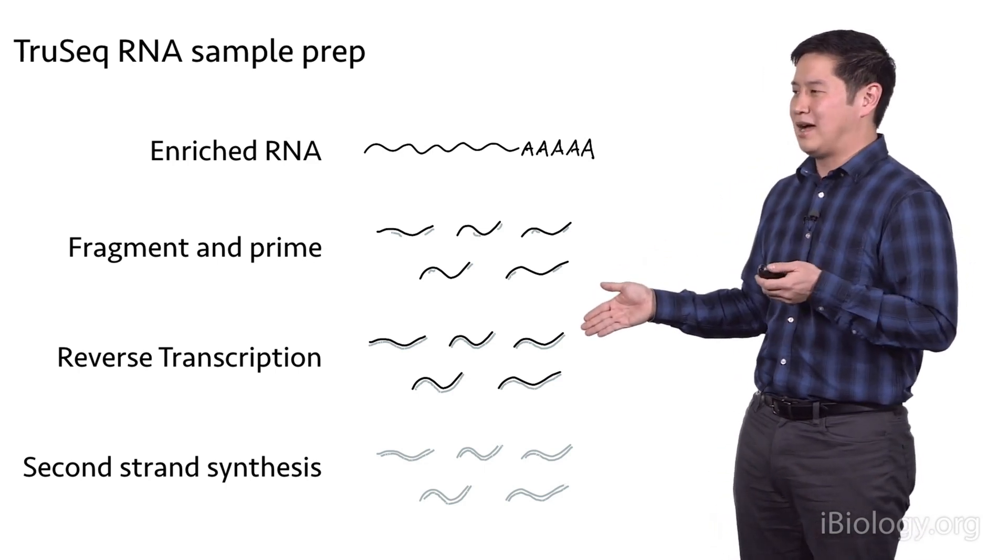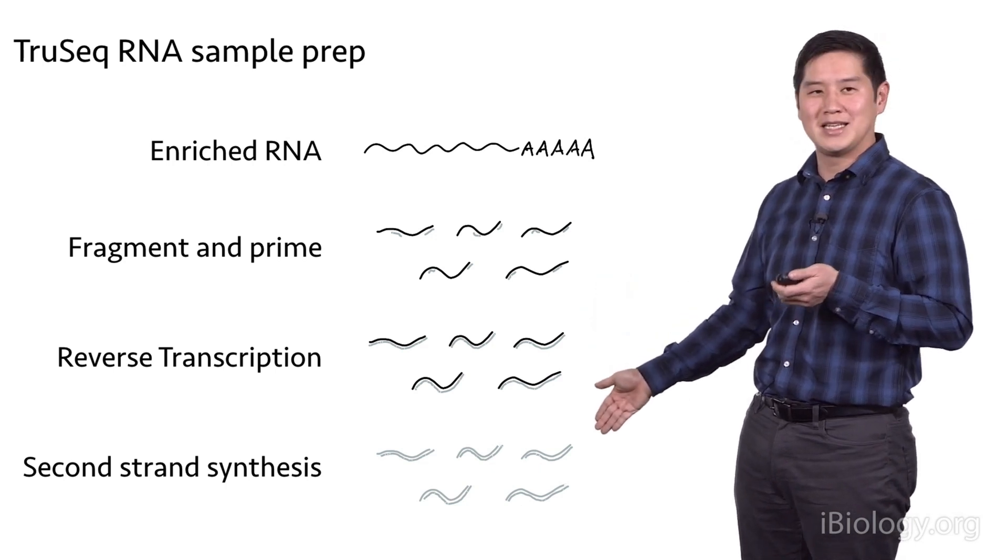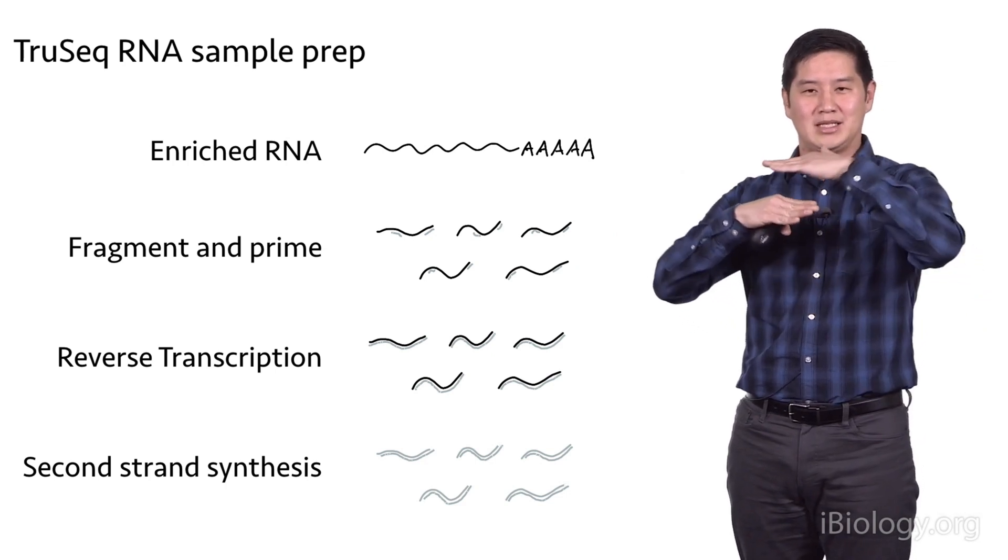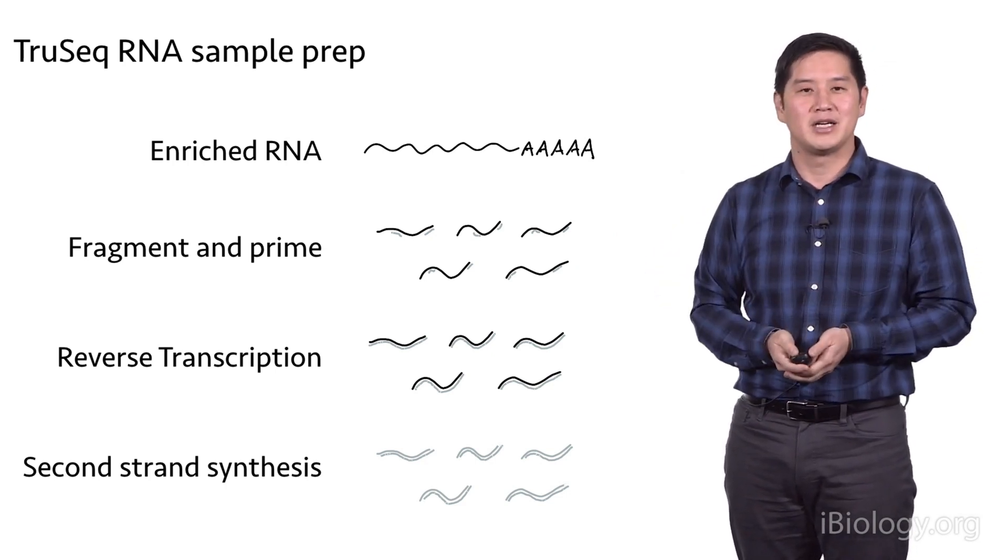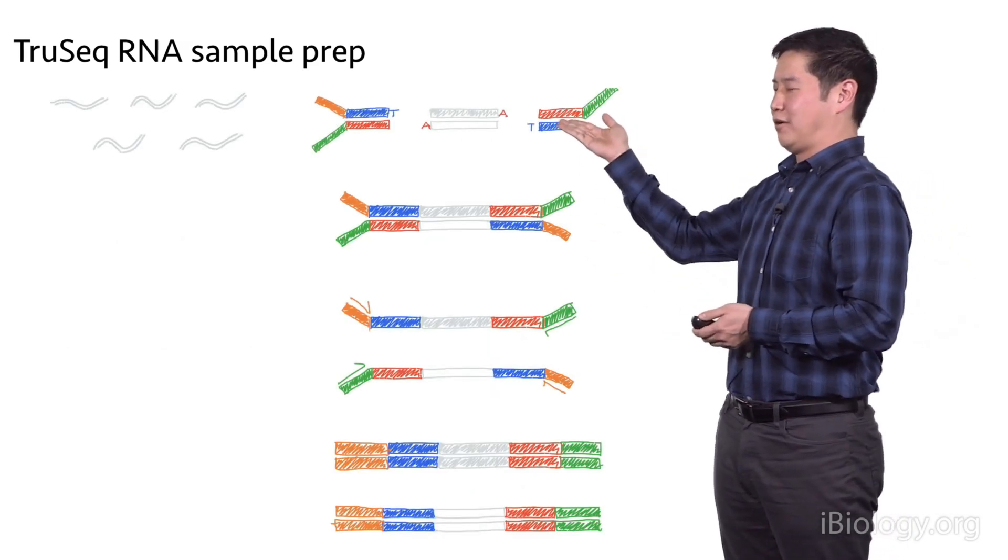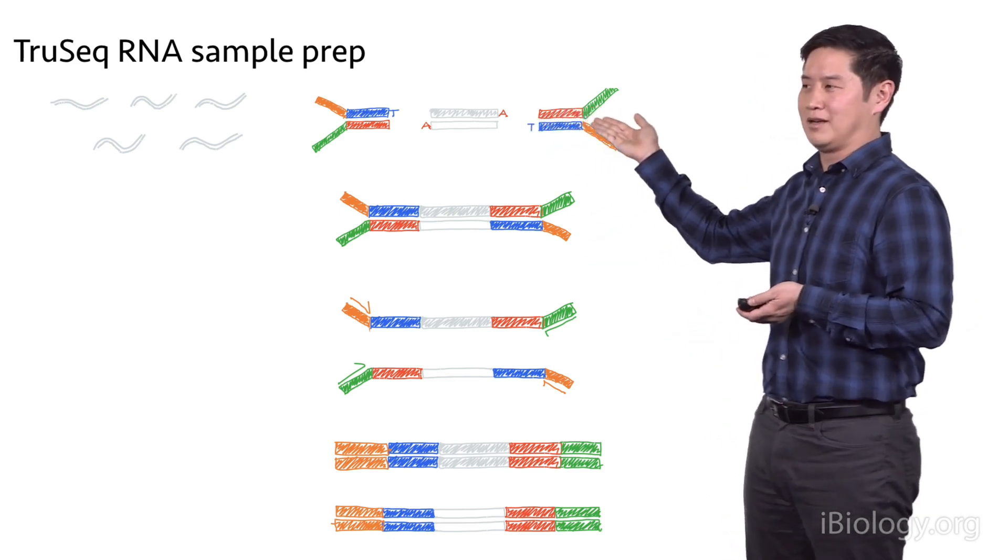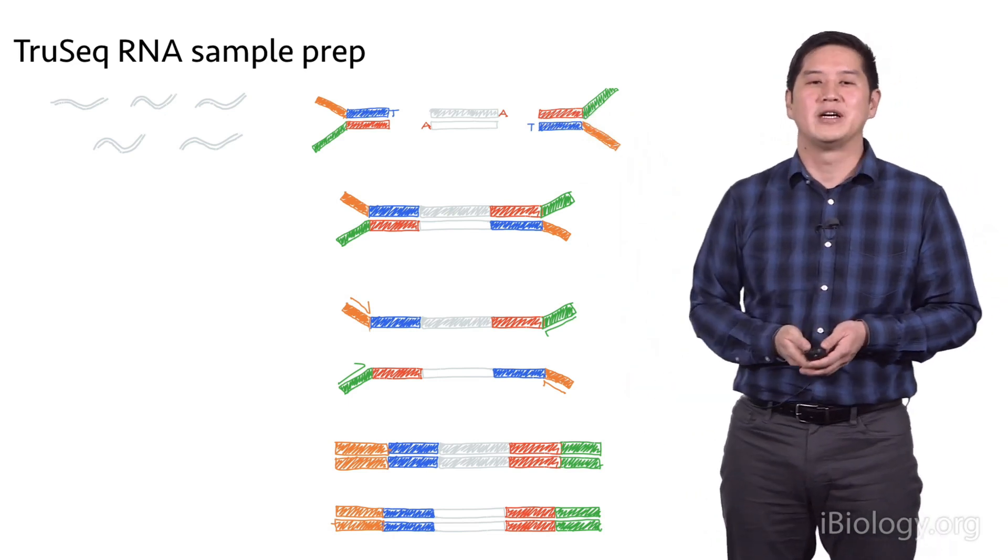After this process, you have single-stranded DNA and you go through a process called second-strand synthesis to convert your single-stranded DNA into double-stranded DNA that can go into library preparation. Once you have your double-stranded DNA that originally came from RNA, you can go through that TruSeq DNA preparation we went over earlier to generate a sequencing library.